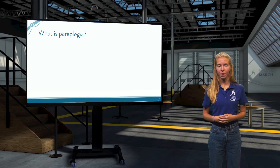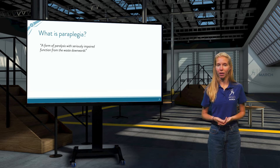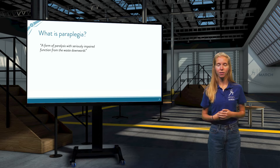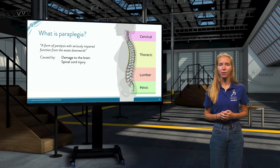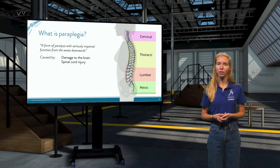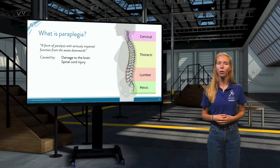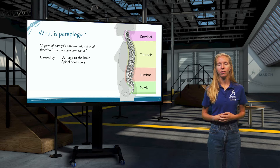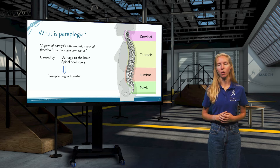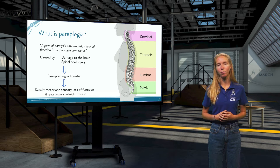So, what is paraplegia? Paraplegia is a form of paralysis with seriously impaired function from the waist downwards. It's almost always caused by damage to the brain or a spinal cord injury, or in some cases even both. Most often, spinal cord injuries to the thoracic, lumbar, or pelvic spinal cord areas are to blame. These injuries prevent signals from traveling to and from the lower part of the body, thus resulting in both motor and sensory loss of function.